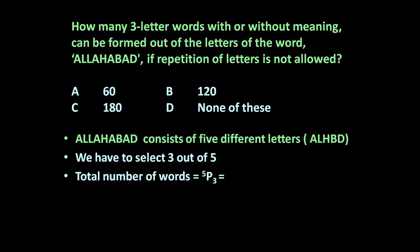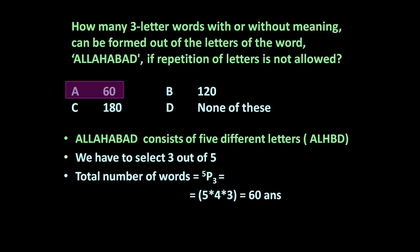Three out of five can be selected in 5P3 ways. 5P3 equals five into four into three, which is equal to 60. So the answer is 60.